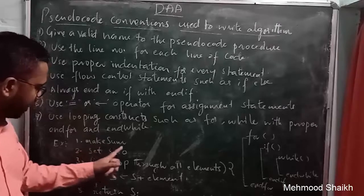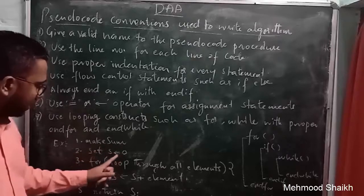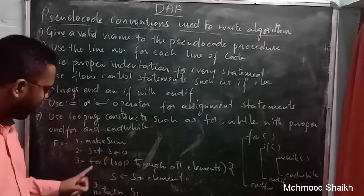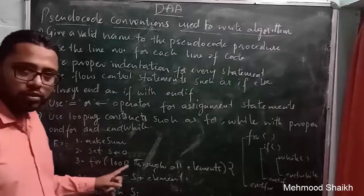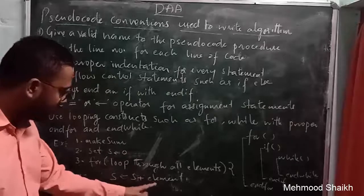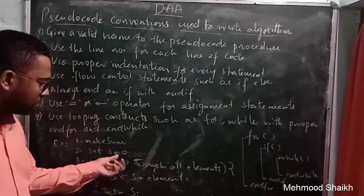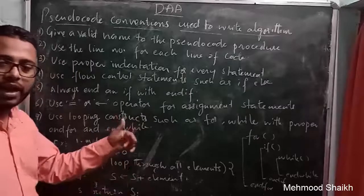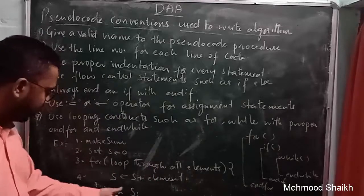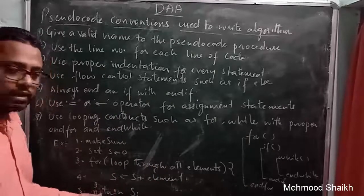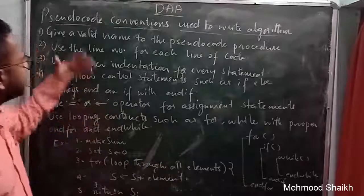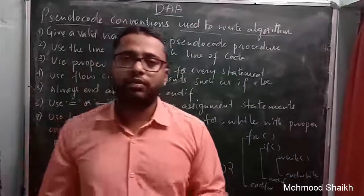Here I have given the name 'make sum' to the pseudocode. I have assigned 0 to variable s — written as 'set s = 0'. Then I have used a for loop, iterating over the elements and adding each element to s, incrementing and summing, and finally returning that sum. This is the way you can write a pseudocode, and this covers everything about pseudocode conventions used at the time of writing an algorithm.